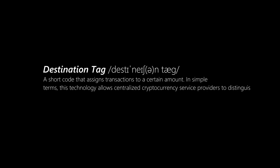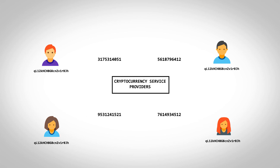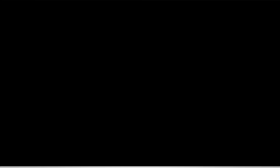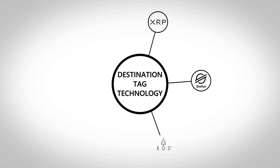A destination tag is a short code that assigns transactions to a certain account. In simple terms, this technology allows centralized cryptocurrency service providers to distinguish each transaction and identify a specific one. Popular cryptocurrencies that use this technology are XRP, XLM, EOS, XMR, and STEEM.